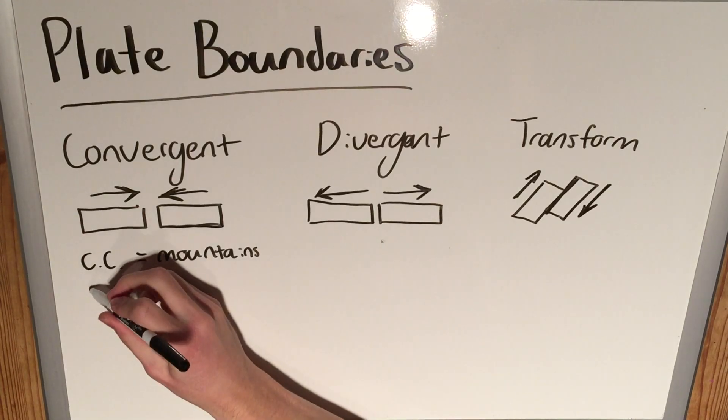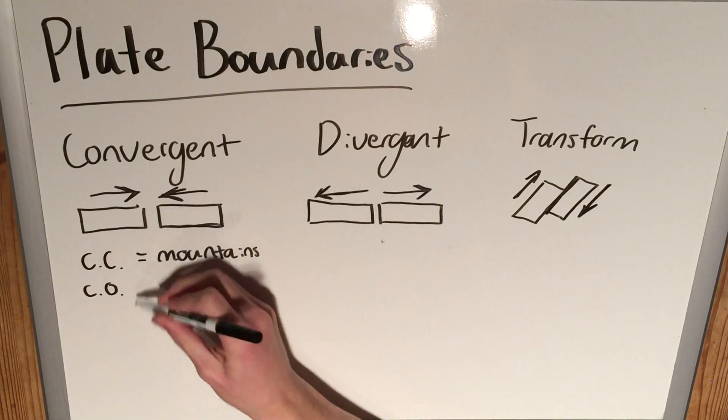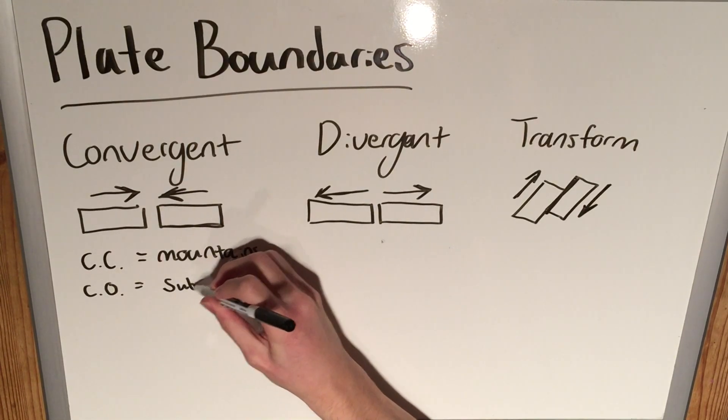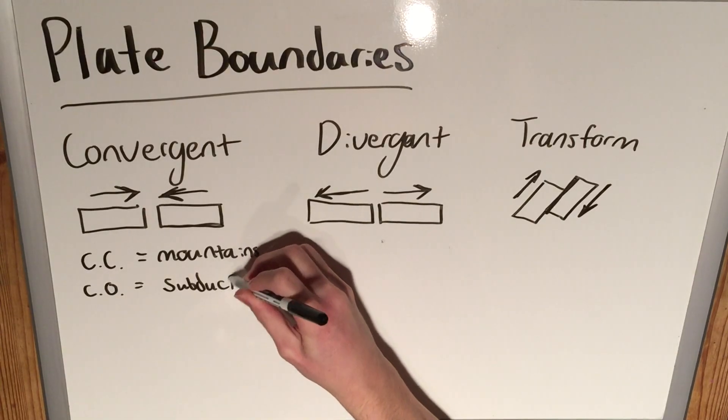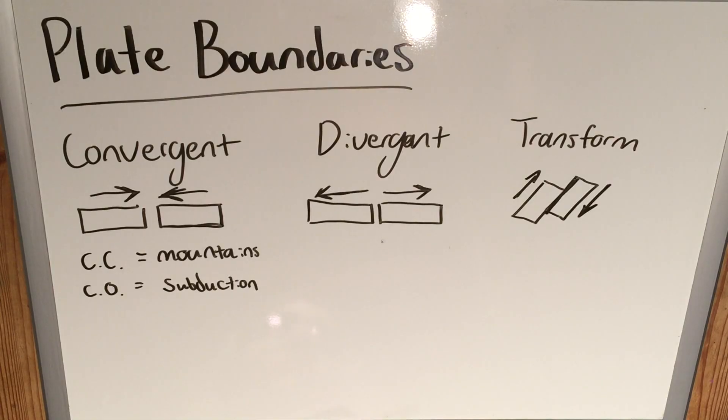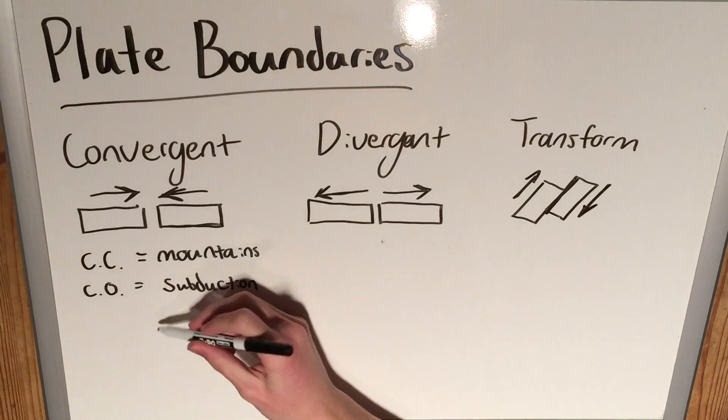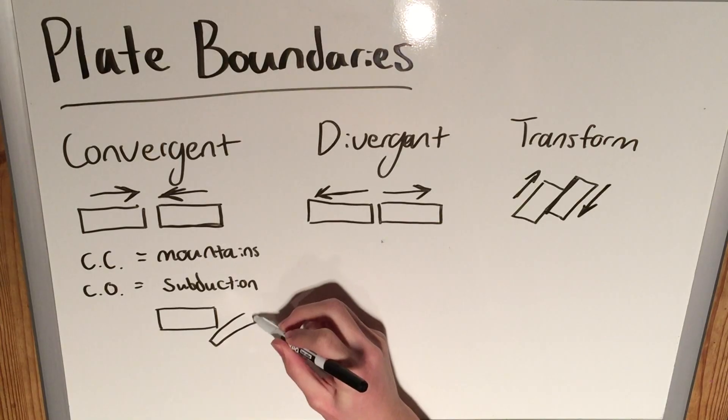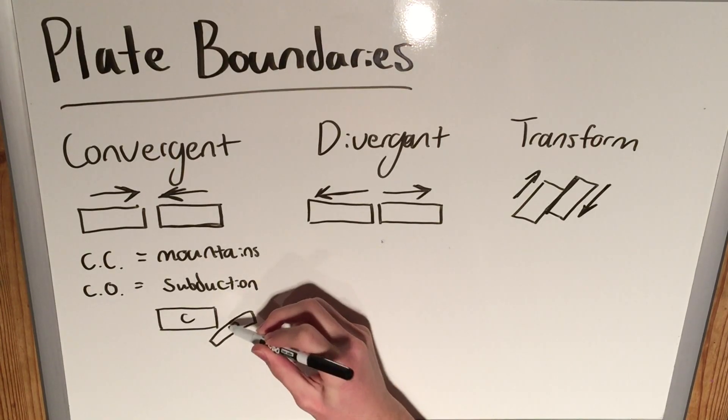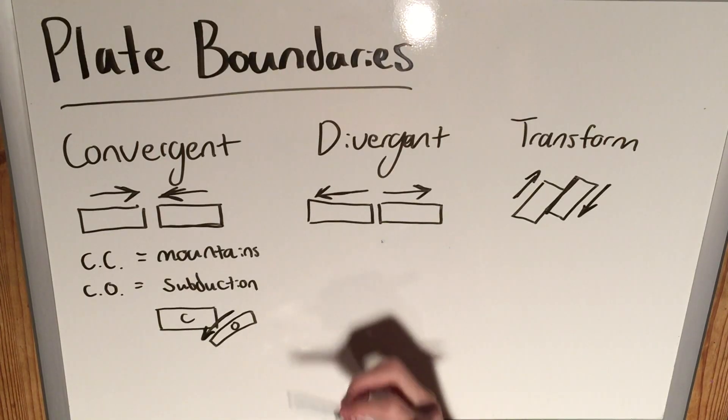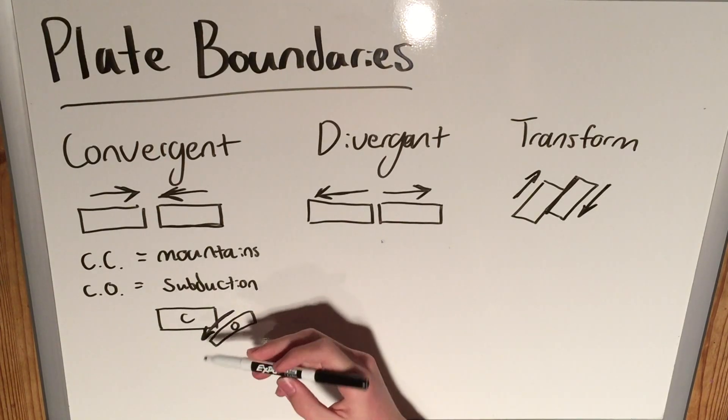A continental and an oceanic, C.O., what's going to happen is called the subduction zone. So subduction is simply when the more dense plate, which is the oceanic crust, goes beneath the continental crust and actually dips into the mantle. So it looks something like this. That's our continental and that's our oceanic. You're going to see the oceanic actually move underneath the continental crust and then go into the mantle below.